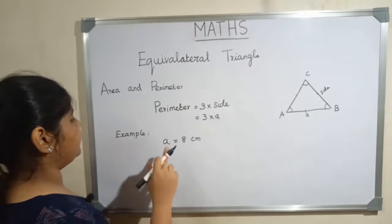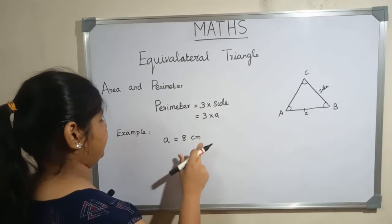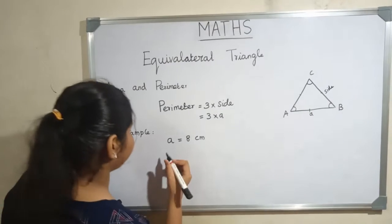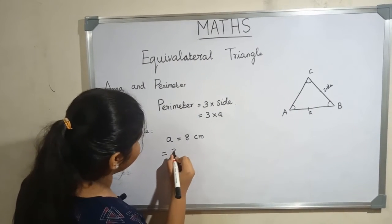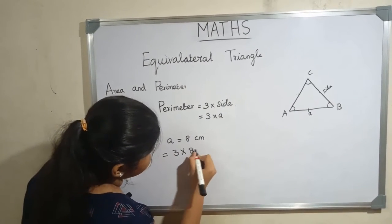a is equal to 8 centimeters. Now let us substitute the formula: 3 multiply 8 centimeters.